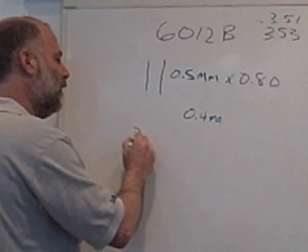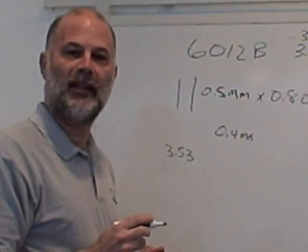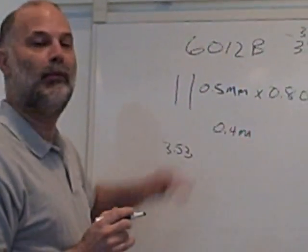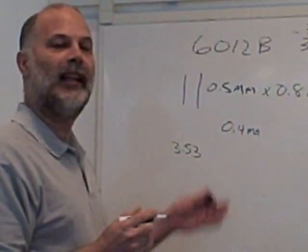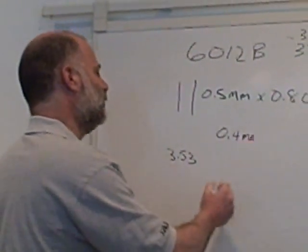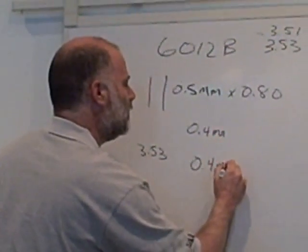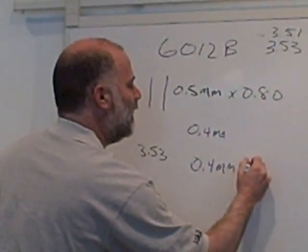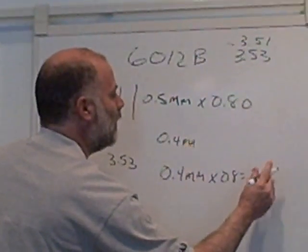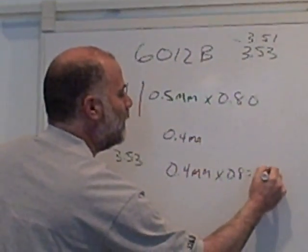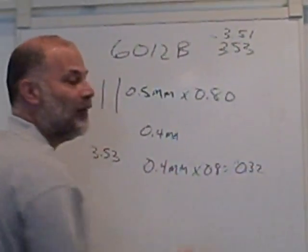Paragraph 3.5.3 then addresses some defects. To look at now my 0.4 millimeter conductor to determine what happens there, it allows a further 20% reduction. So I have my 0.4 millimeters, and I take my 80%, and I'm at 0.32. 0.32 is my final conductor.